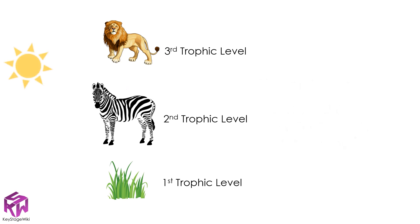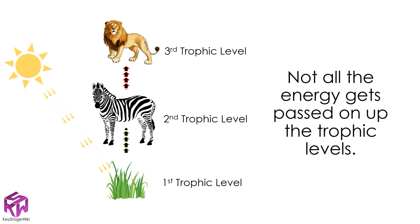Here we can see that the Sun transfers energy to the first trophic level — in this case it's grass. That energy is transferred to the zebra when it eats the grass, and the energy is transferred to the lion when the lion eats the zebra.